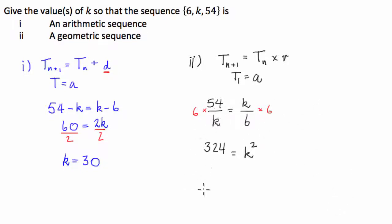and then we'll take the square root of both sides. So we're going to have k = ±√324, which equals ±18.